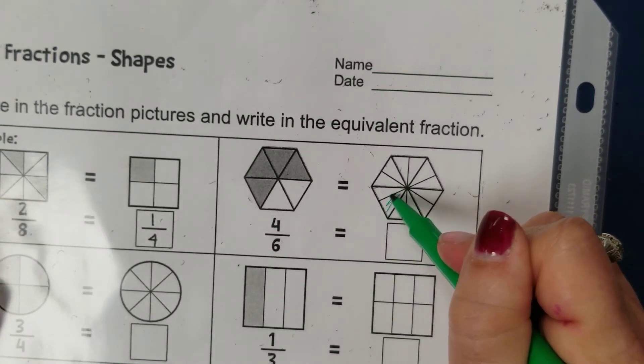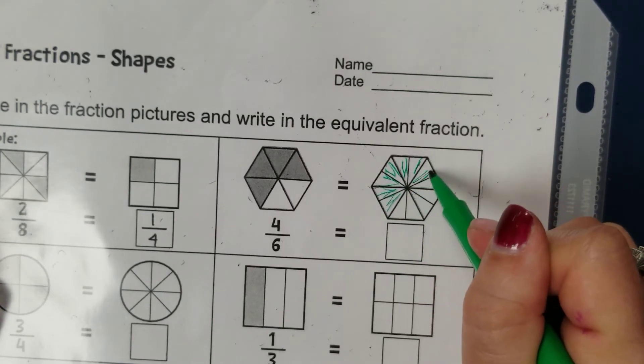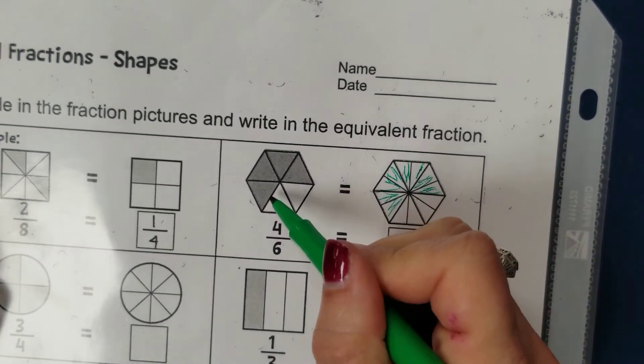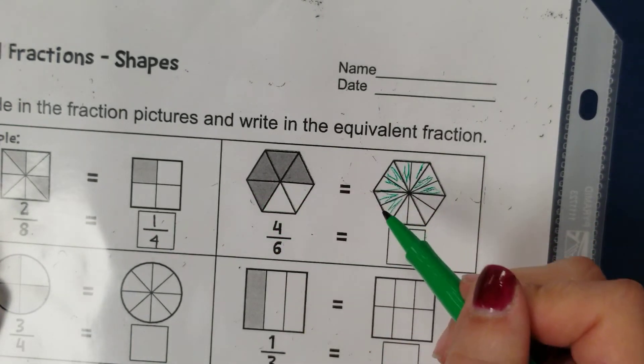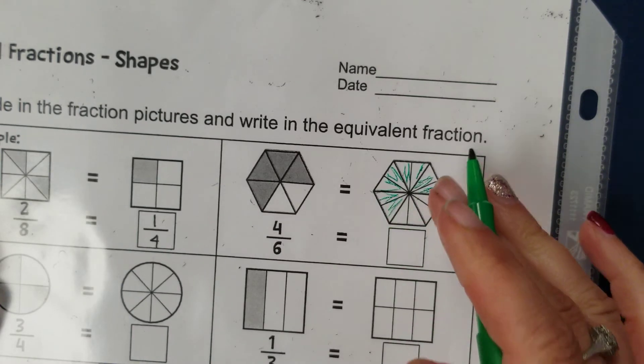Now to shade an equal number of parts I would go around here and I would shade this many. If you look closely you can see that each of these single parts here has been broken into two over here on this second shape.